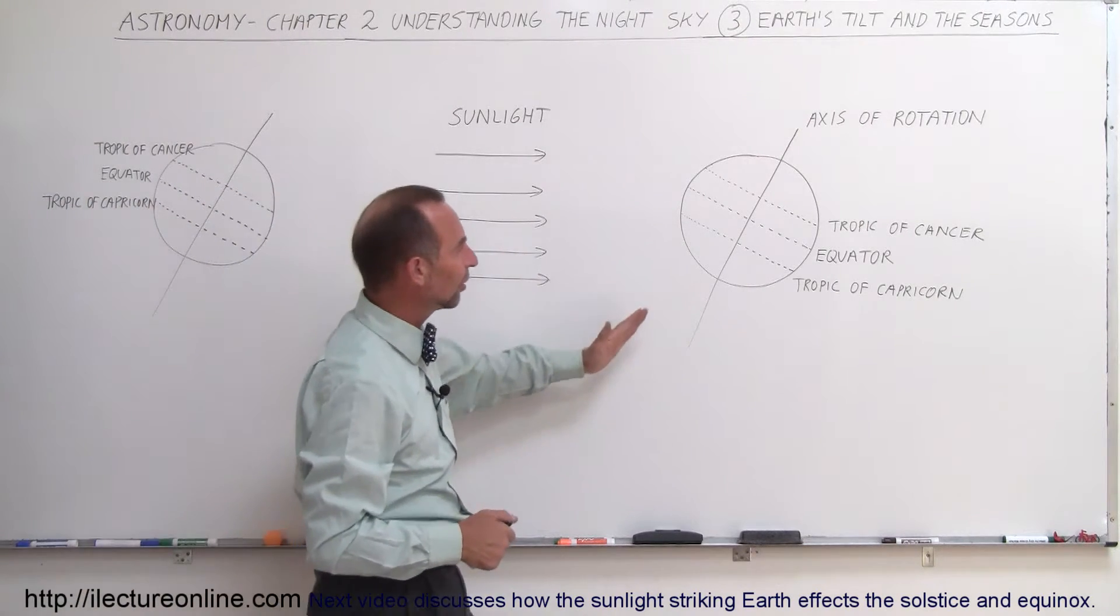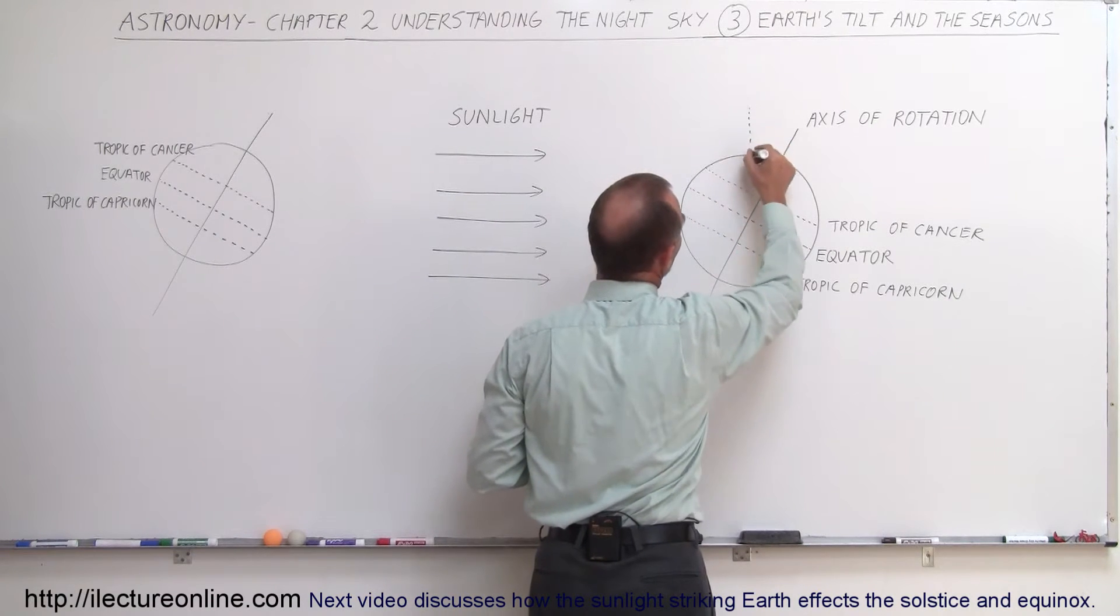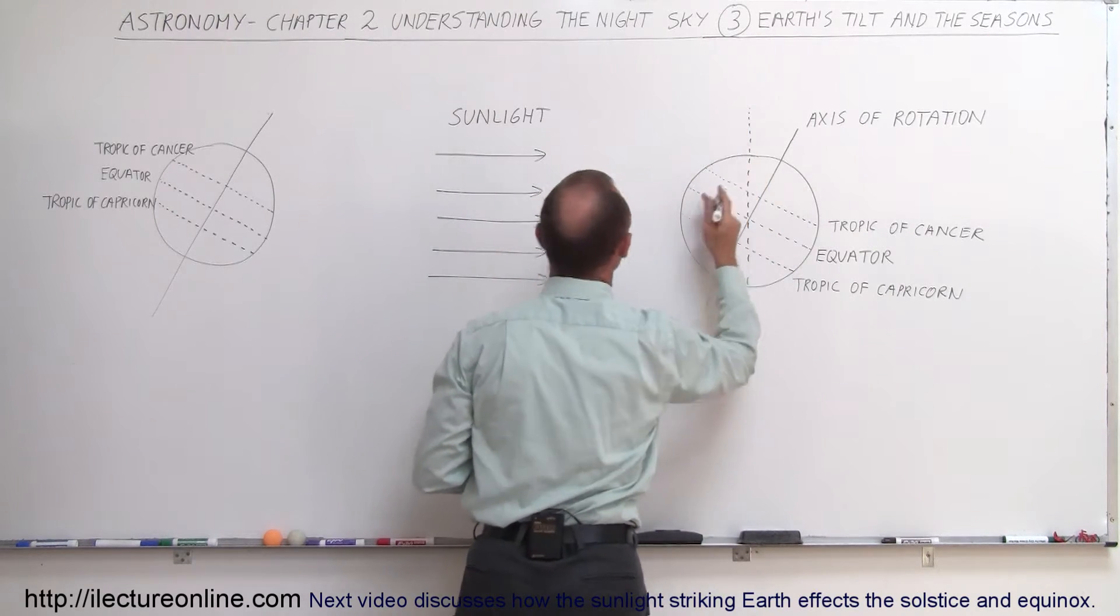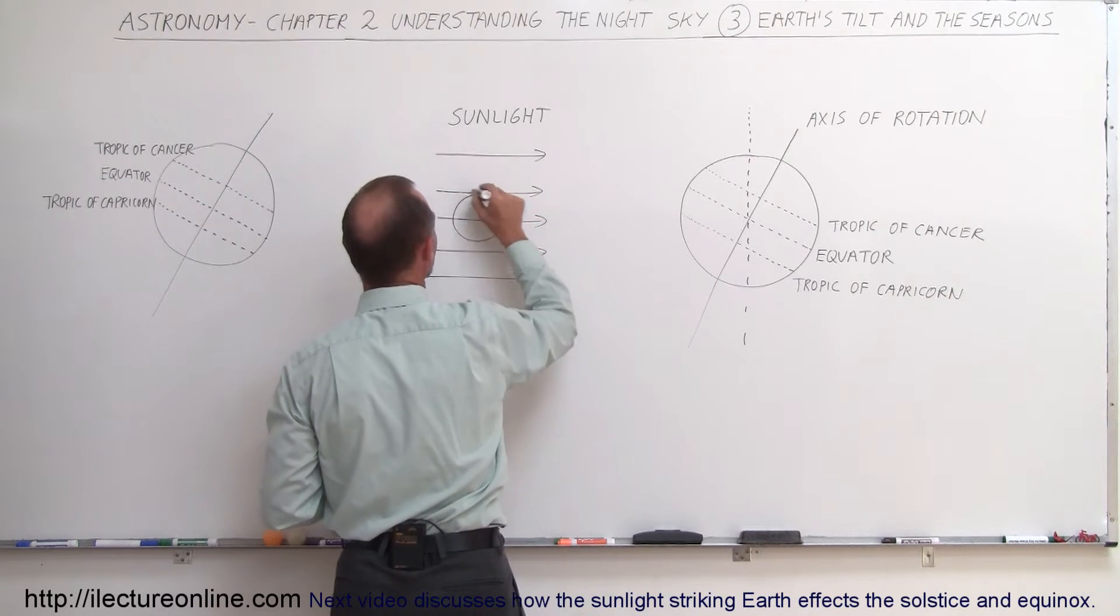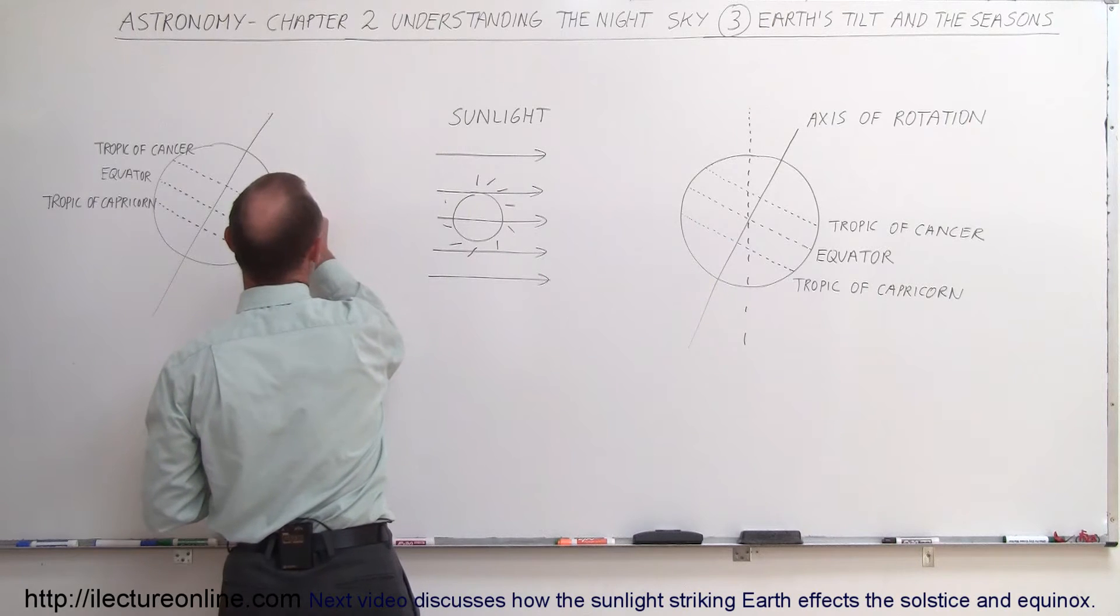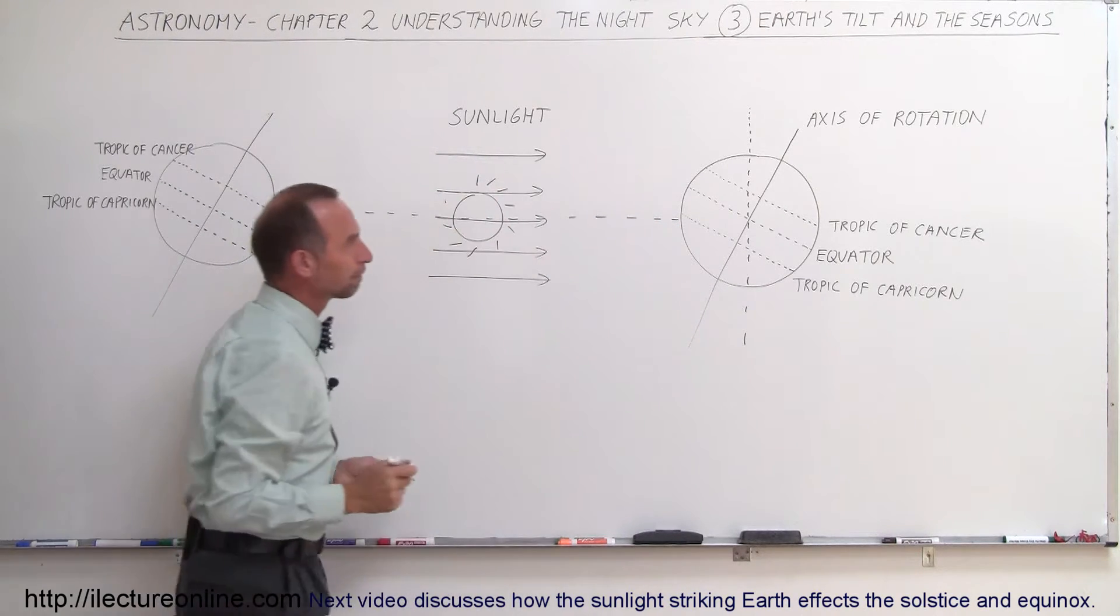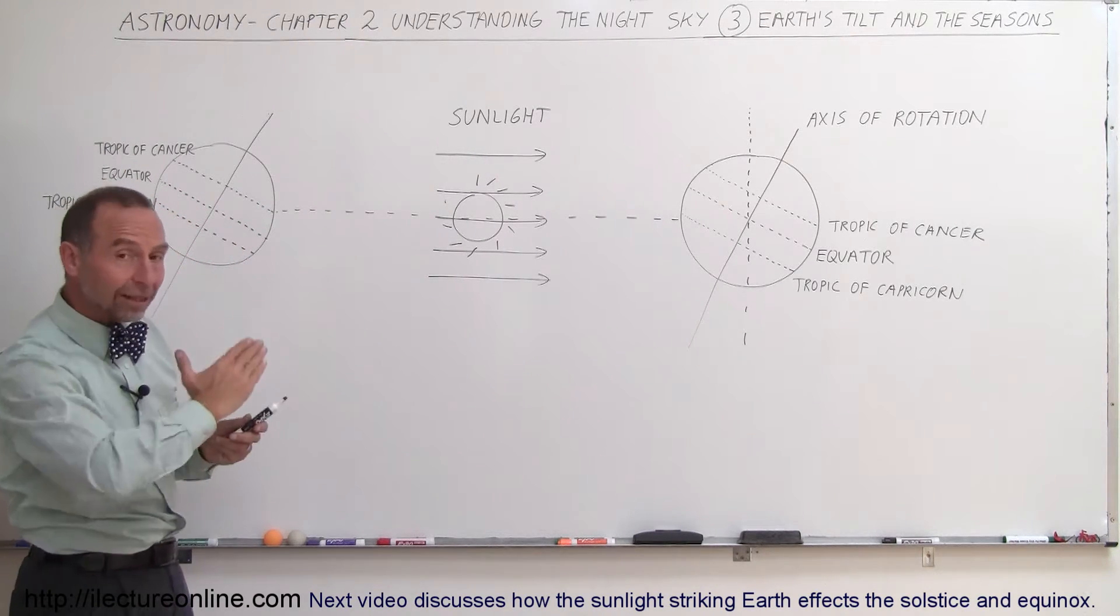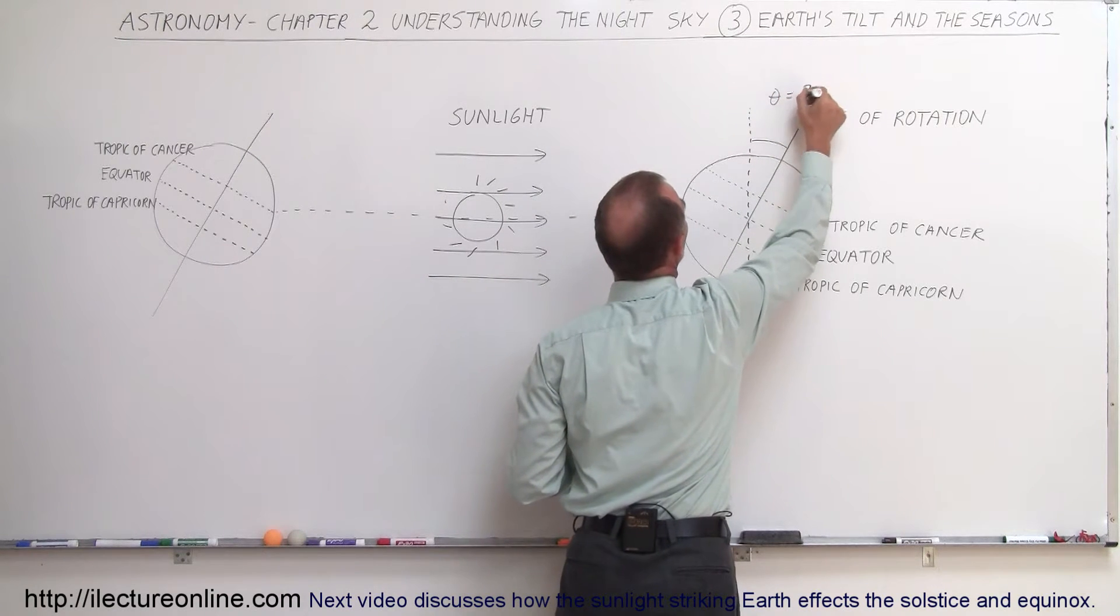Now notice here that the Earth is tilted. The tilt is relative to the ecliptic, the ecliptic plane. So if we draw a line straight up and down like this, that would be perpendicular to the ecliptic plane. Imagine the Sun is over here, and as the Earth goes around the Sun, it travels along what we would call the ecliptic plane, like that. And the tilt is relative to the ecliptic plane, and currently the tilt is about 23.5 degrees.